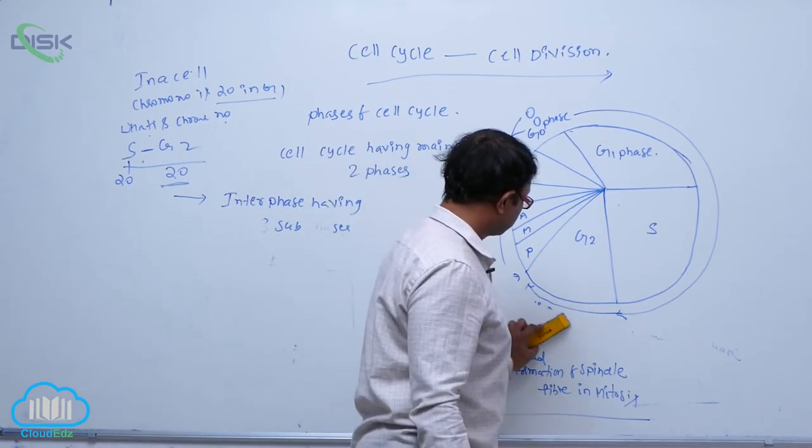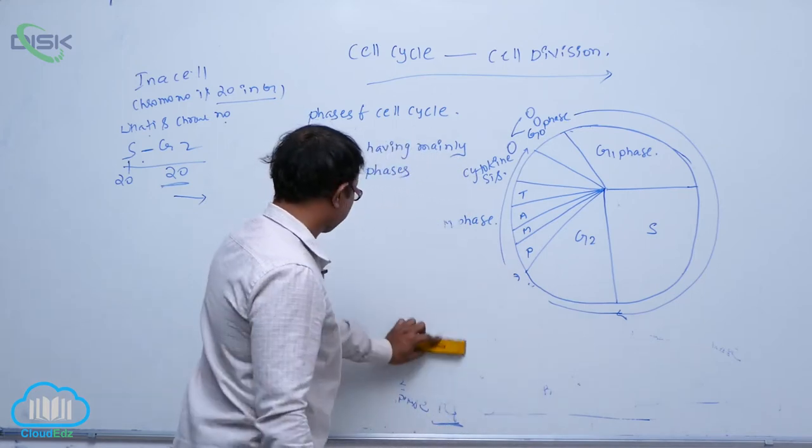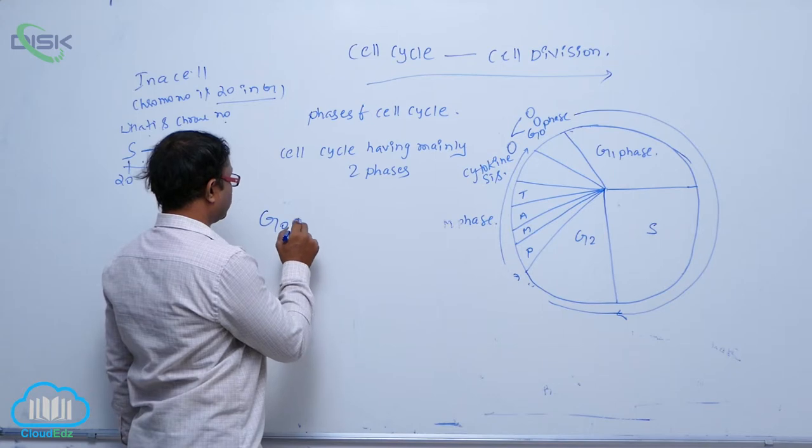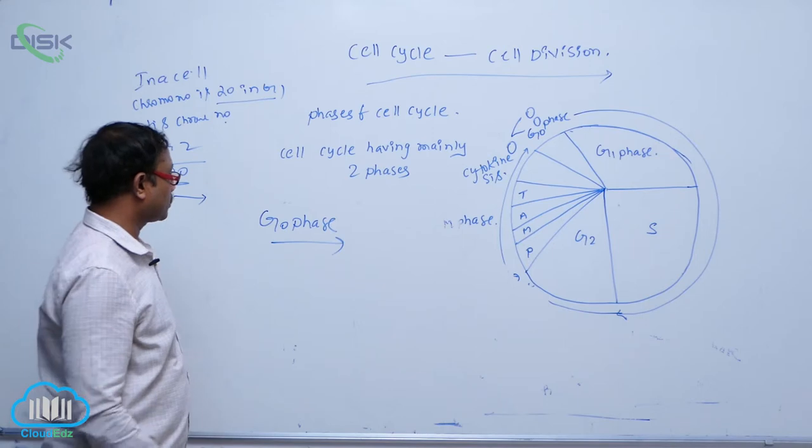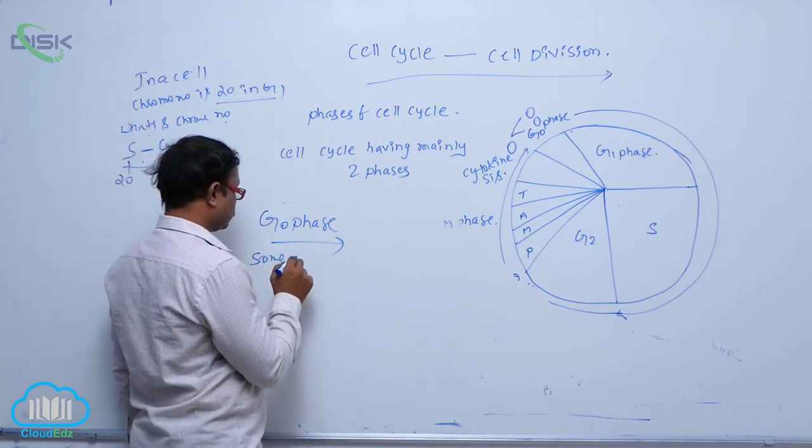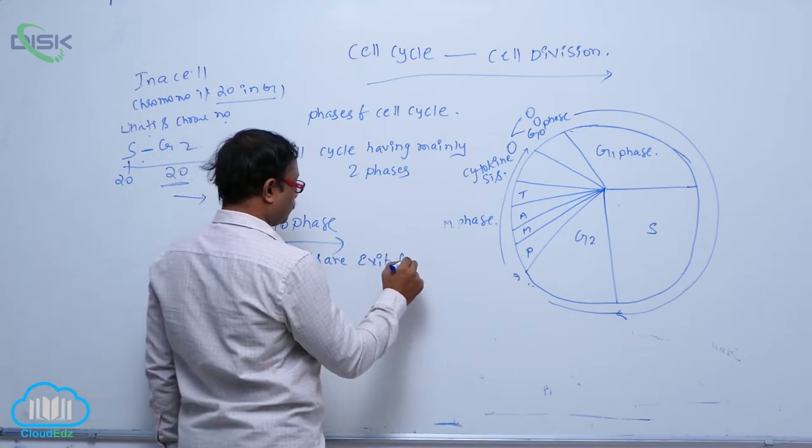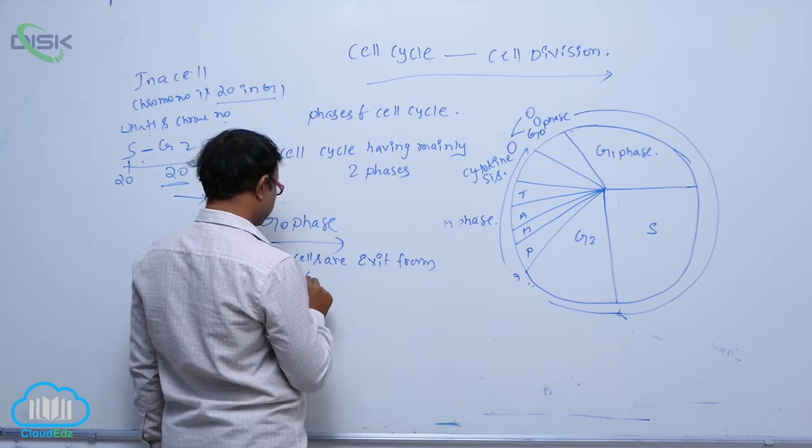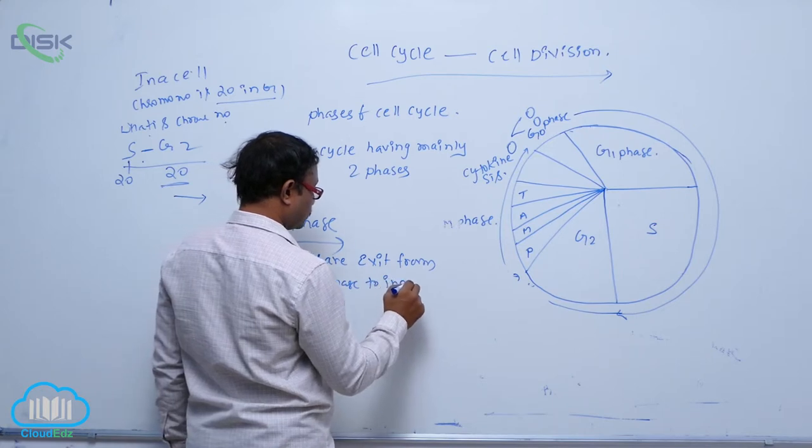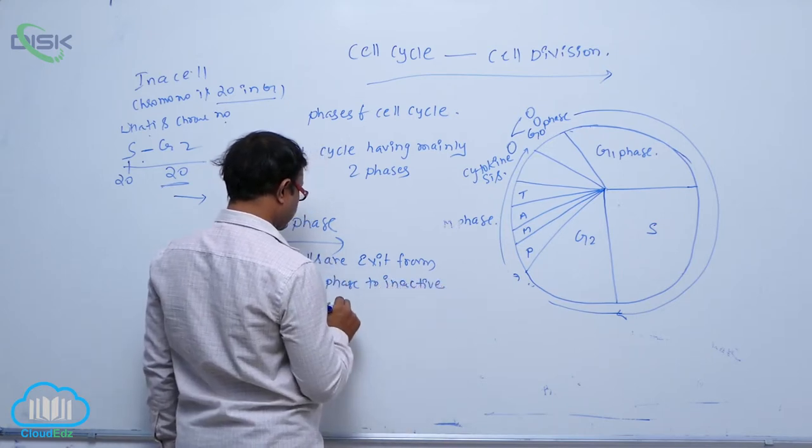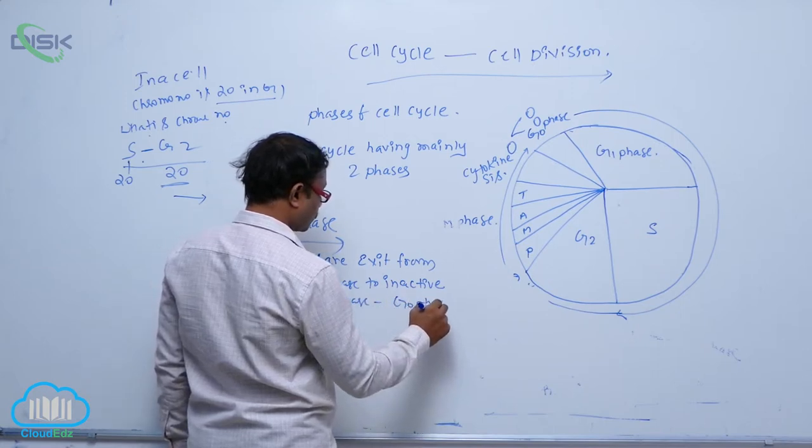After the G0 phase, so generally in the G0 phase, some cells exit from G1 phase to inactivate phase. G0 phase, that is known as G0 phase.